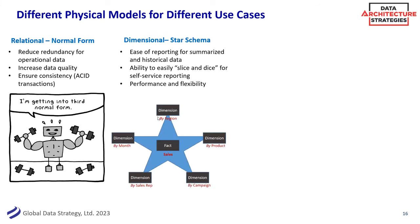We also have the star schema, which kind of looks like a star — we'll talk more about that. It's really good for summarizing and slicing and dicing historical data over time. It can be a very performant way of doing that, but it isn't everything — it has a certain use case. Those are some of the very common ones with enterprise reporting data.